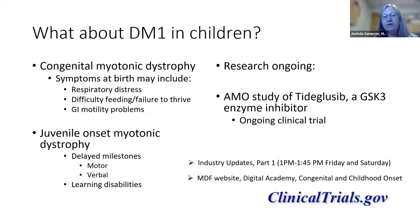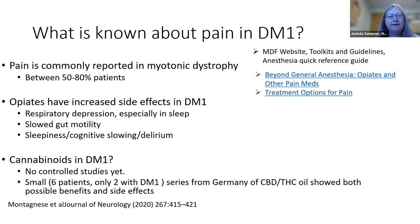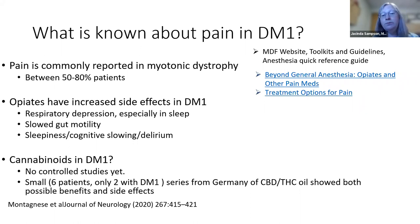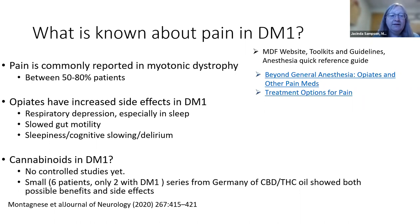Pain is common in myotonic dystrophy, reported by 50 to 80% of patients, with low back pain most common and abdominal pain also frequent. We don't fully understand the mechanism. Certain pain medications can cause more problems — opiates in particular can depress breathing, especially during sleep, worsen sleep apnea, potentially cause a respiratory crisis, slow gut motility causing constipation, and cause excessive sleepiness, slowed thinking, or delirium.